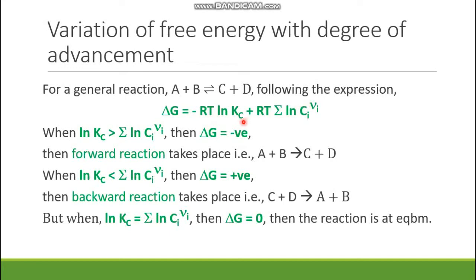If the concentration of the products is much higher than the equilibrium concentration of the products, then the summation term is greater than ln Kc, and in that case ΔG is positive. A positive ΔG means the backward reaction takes place: C + D → A + B. So it is clear that if the concentration of the products is less than equilibrium, the reaction moves forward to increase product concentration, and vice versa — if product concentration is higher, products combine to reform reactants in the backward direction.